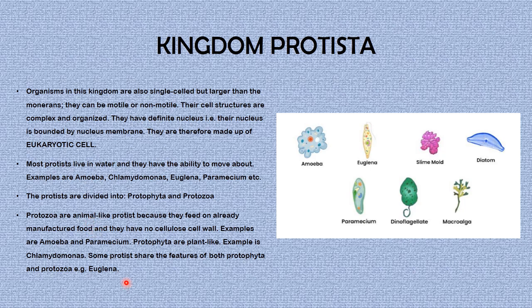Most protists live in water and have the ability to move about. Examples are amoeba, chlamydomonas, euglena, and paramecium. The protists are divided into protophyta and protozoa. Protozoa are animal-like protists — they feed on already manufactured food and have no cellulose cell wall; examples are amoeba and paramecium. Protophyta are plant-like; example is chlamydomonas. Some protists share features of both, like euglena. Other examples include slime mold, diatoms, macroalgae, and dinoflagellates.